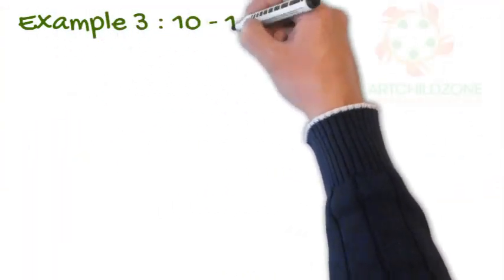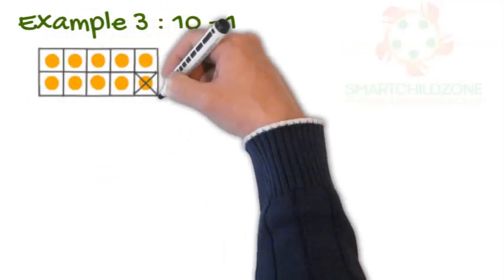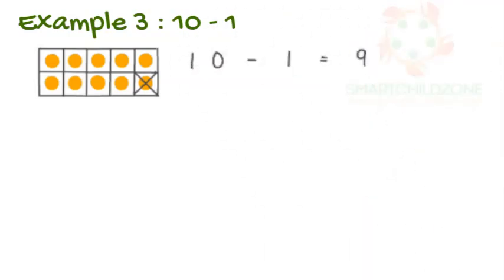Example 3: 10 minus 1. We count 10 and take away 1 from it, which will remain 9.